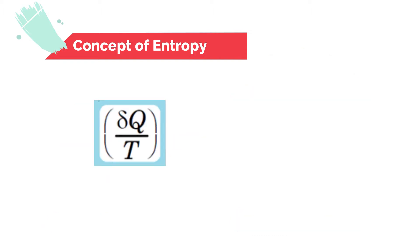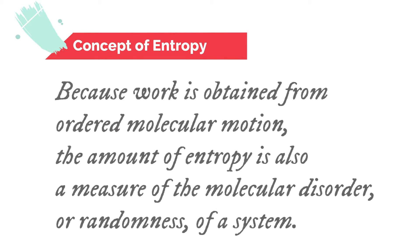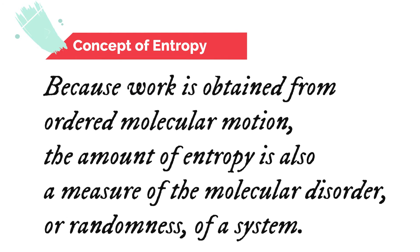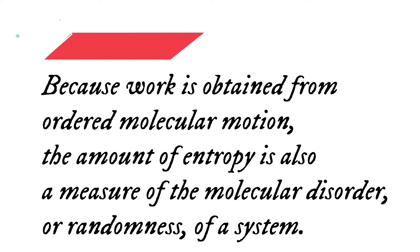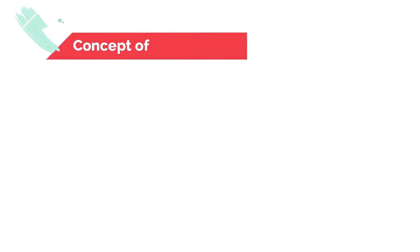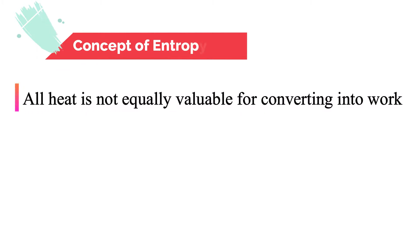Entropy is a measure of the degree of disorderness of a system — the measure of thermal energy of a system per unit temperature that is unavailable for doing useful work, because work is obtained from ordered molecular motion. The amount of entropy is also a measure of molecular disorder or randomness of a system. In heat engine theory, entropy plays a vital role and leads to important results which by other methods can be obtained much more laboriously.